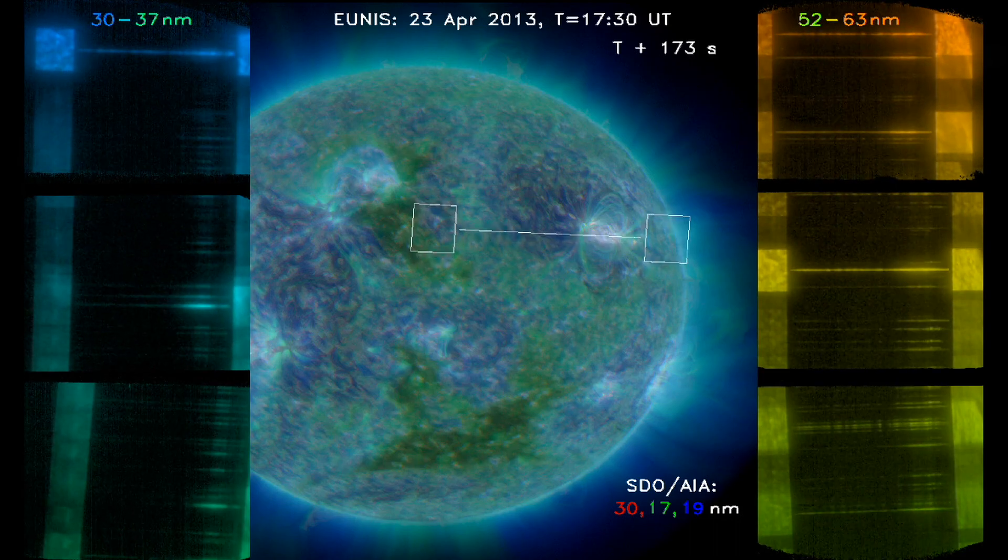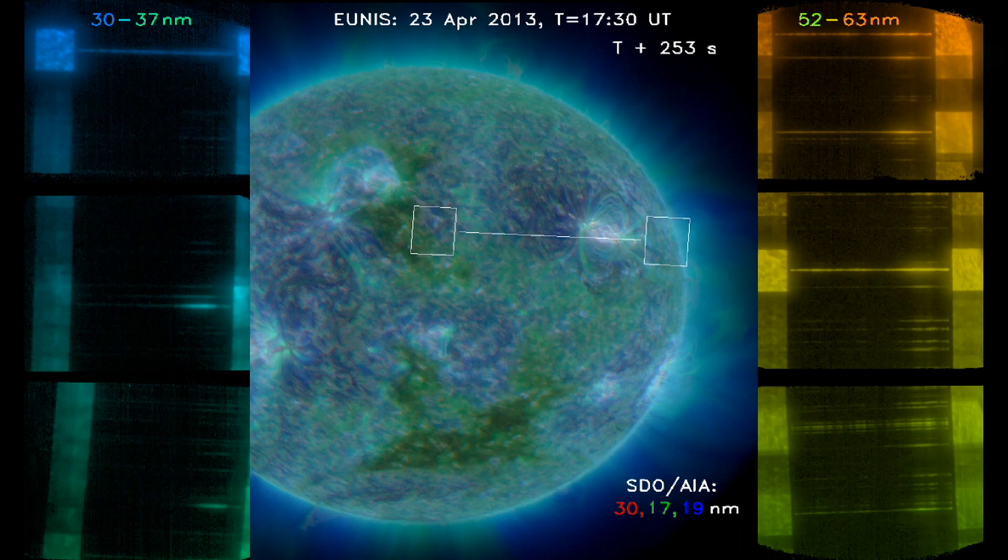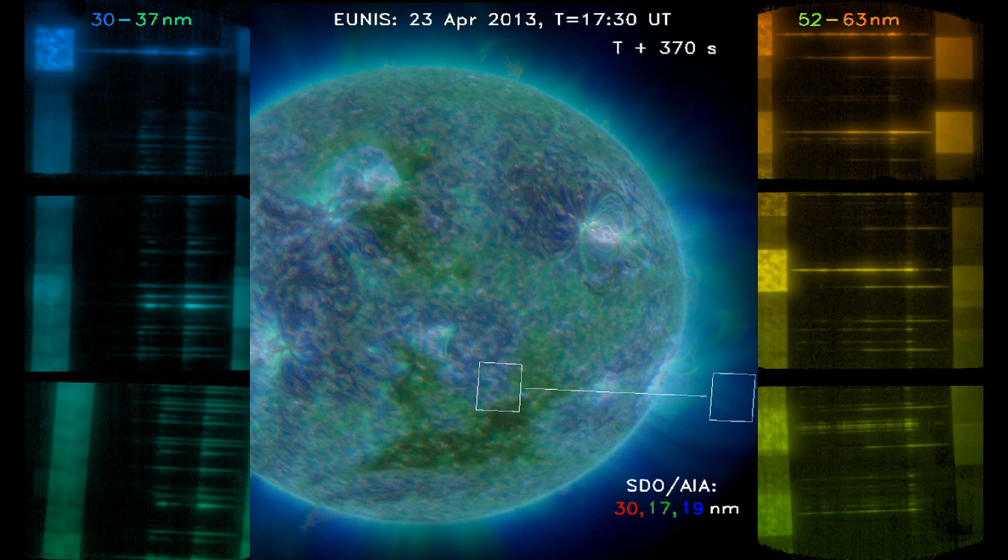Basically, it's two separate instruments, two spectrometers pointed in the same area of the sun, so that we can be observing a very wide wavelength range.